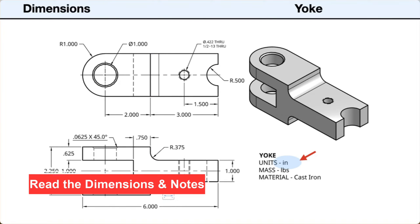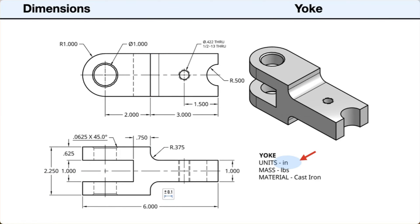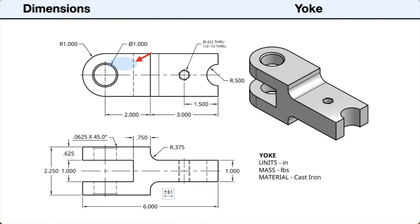Next, we'll look at the dimensions and notes. The dimensions are in decimal inches. The overall length is 6 inches. The tongue end is 3 inches. The yoke end is 2 inches measured to the center of the semicircular end. The width is 2 inches and the semicircular end has a radius of 1 inch. The through hole has a diameter of 1 inch. The yoke end has an overall height of 2.25 inches. The top and bottom plates have a thickness of 0.625 inches. The rectangular center space has a height of 1 inch. The depth of the slot is 2.25 inches from the semicircular end.